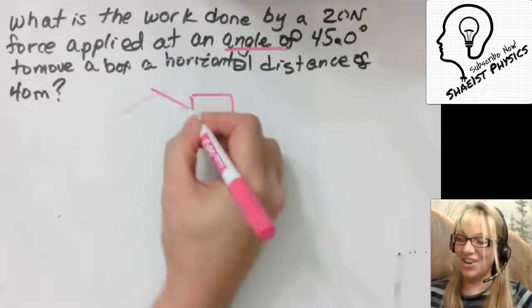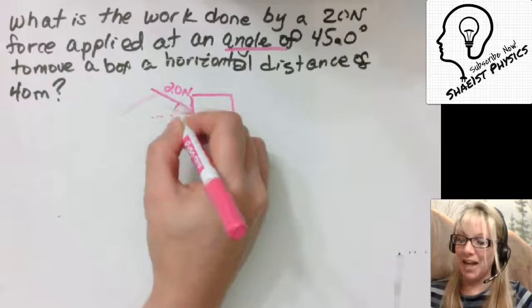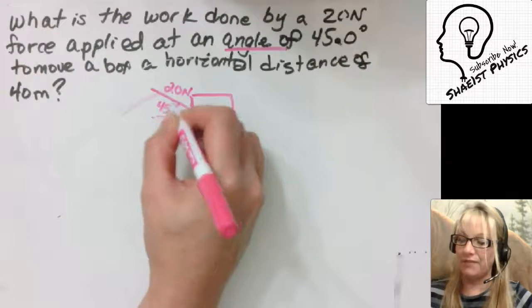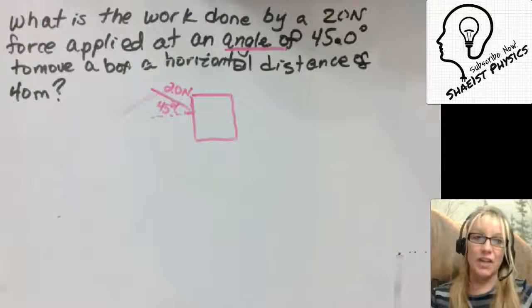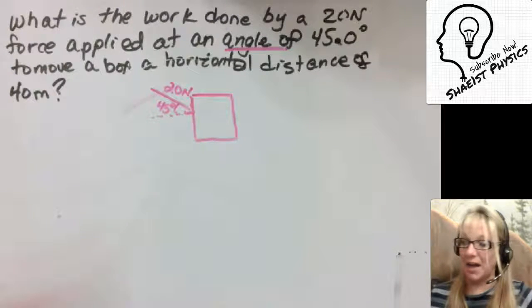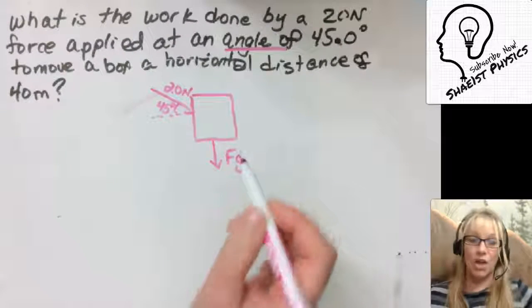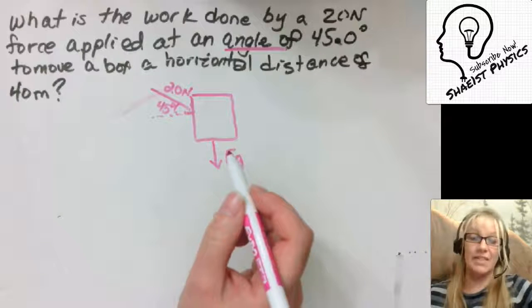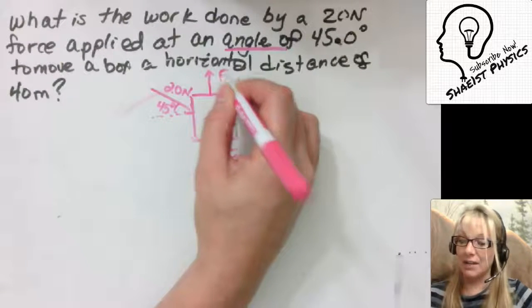So here's our 20 Newton force and it is being applied at a 45 degree angle. Now we have to consider what the other forces are on the box. So we have the force of gravity acting down and we also have the surface, whether that's a table or a floor acting up on the box.